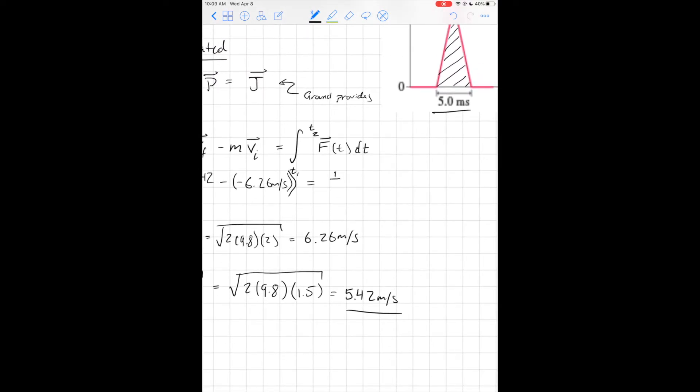So what is the area of a triangle? Well, it's base times height times one half. So I have one half times five times 10 to the negative third seconds times this F_max, my height.